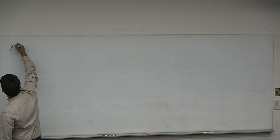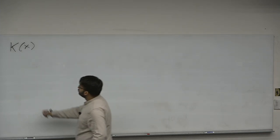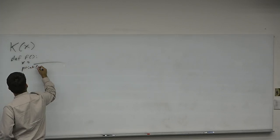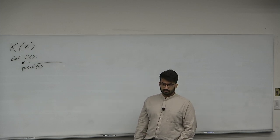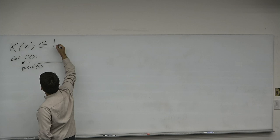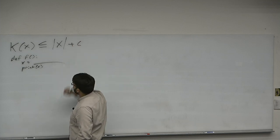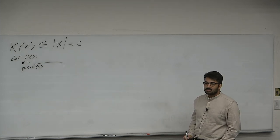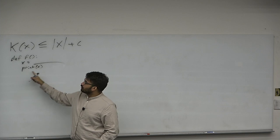Now let's compute upper bounds on the Kolmogorov complexity of some strings. For any string x, consider the program: def f, takes no input, hard-codes x, print x. The size of this program is the size of x plus a constant C. So K(x) ≤ |x| + C.